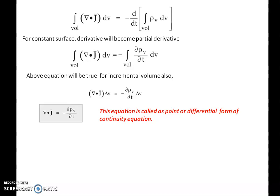For a steady state current, there is no change in the value of current, so the rate of flow of charge is constant. Therefore, the term partial rho V by partial t equals zero for steady state current, because the charge is not changing. So for steady state, the continuity equation becomes del dot J equals zero.